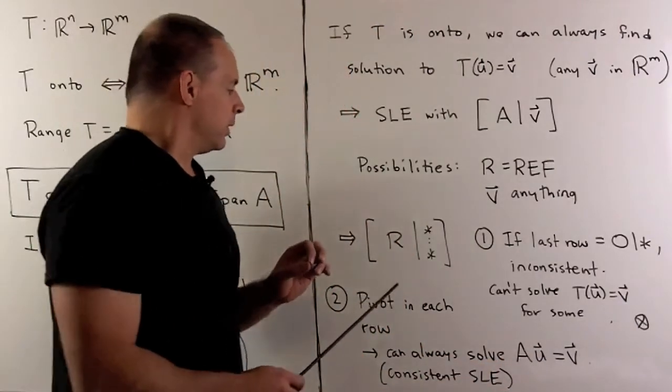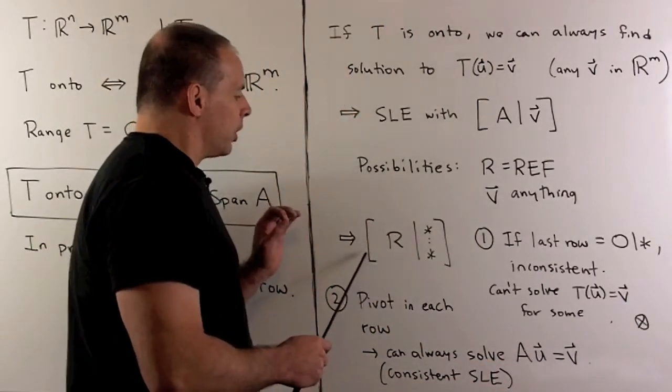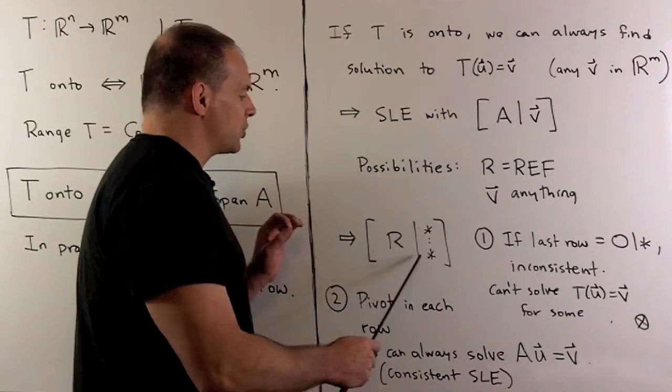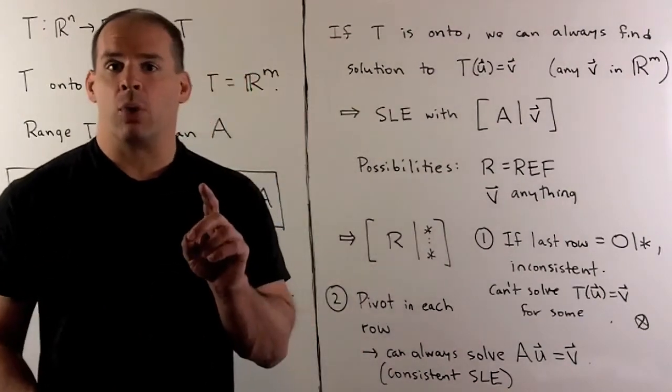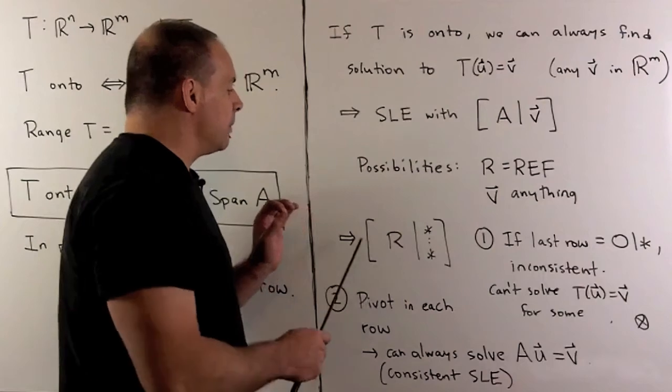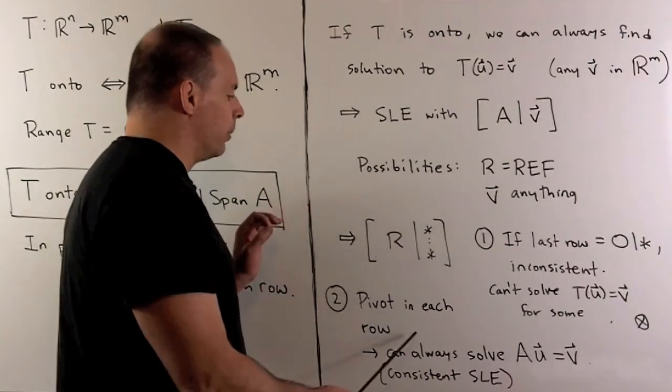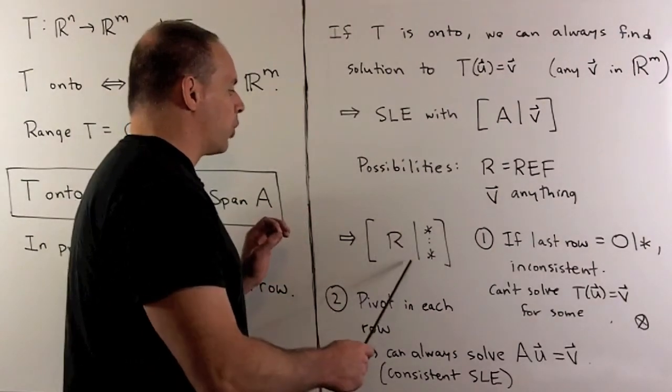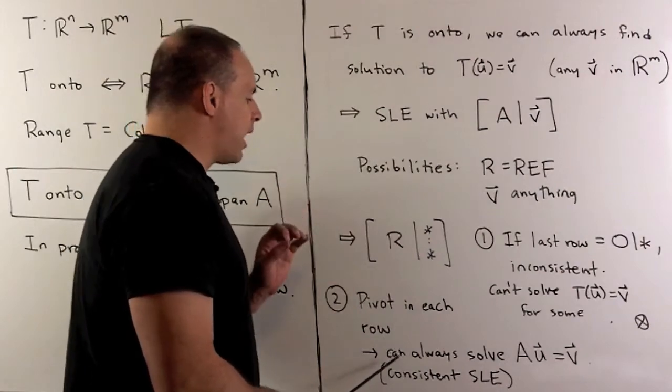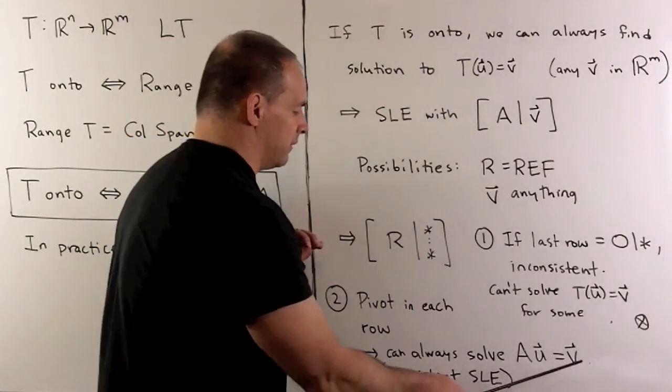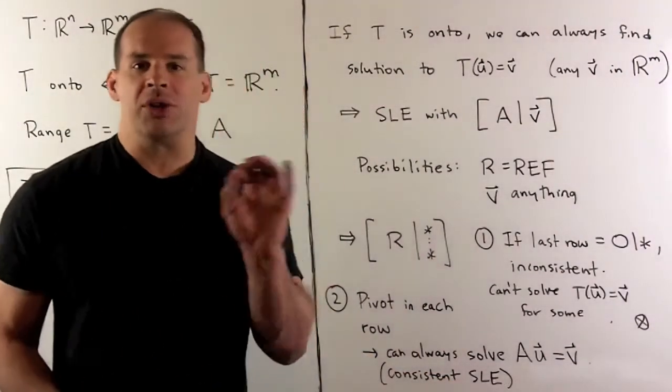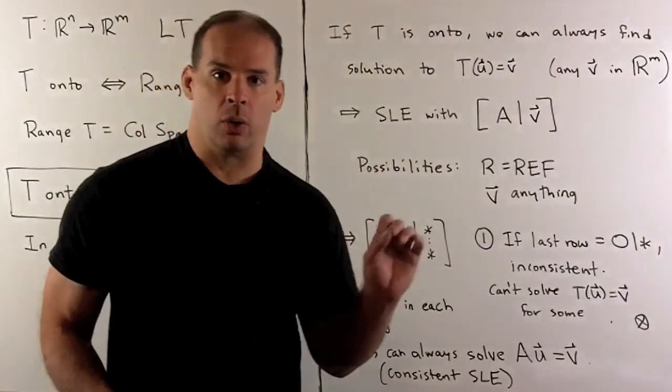In the other case, okay, well, if I don't have a row of zeros in this last row, in the row echelon form, then that's going to mean we have to have a pivot in each row. If there's a pivot in each row, we're always going to be able to solve the equation A u is equal to v, which means we're always going to have a consistent system of linear equations.